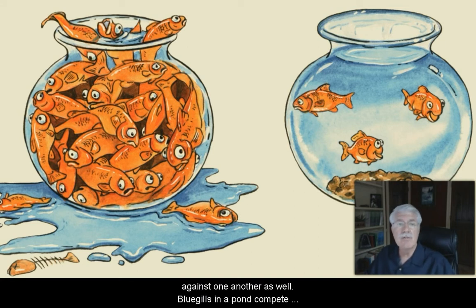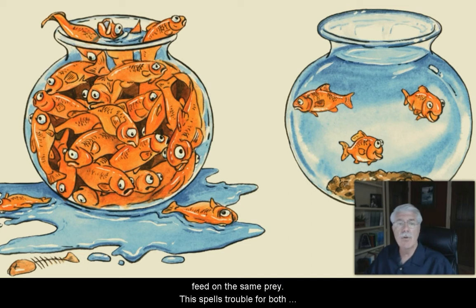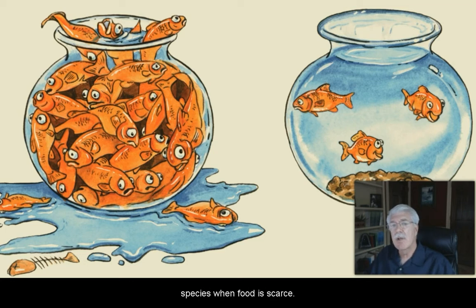Populations of species within a community may compete against one another as well. Bluegills in a pond compete with green sunfish, since both species are similar and feed on the same prey. This spells trouble for both species when food becomes scarce.